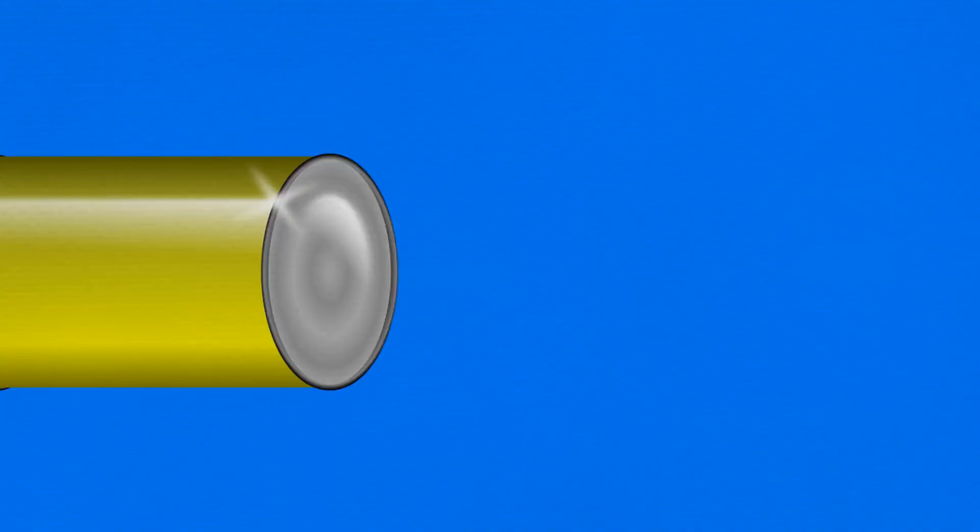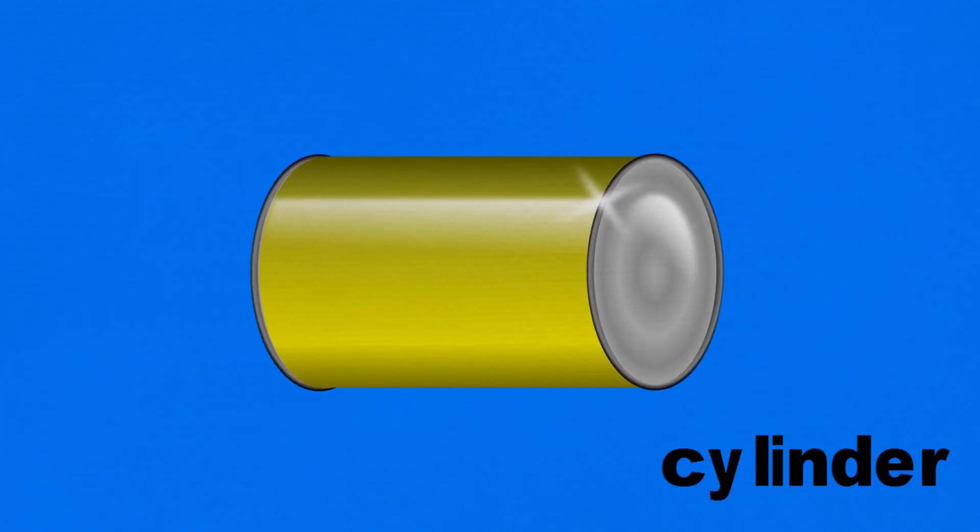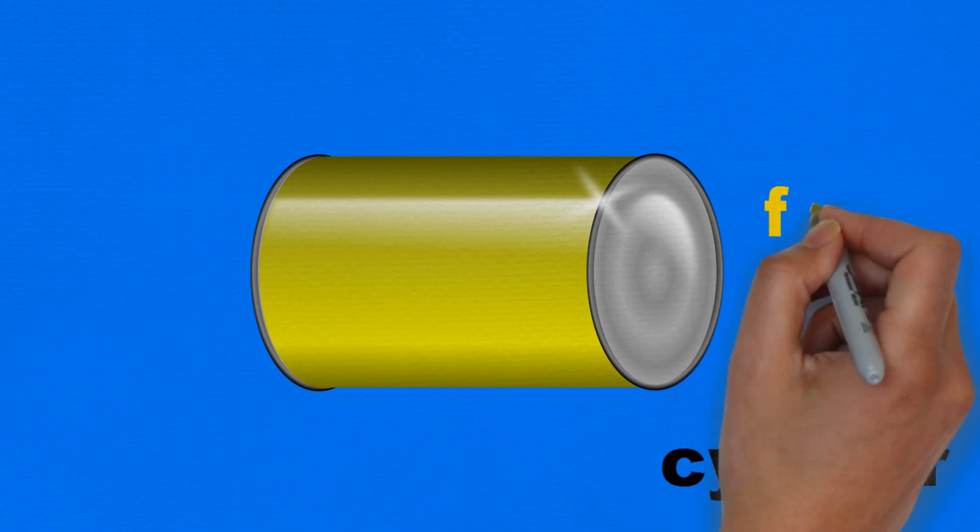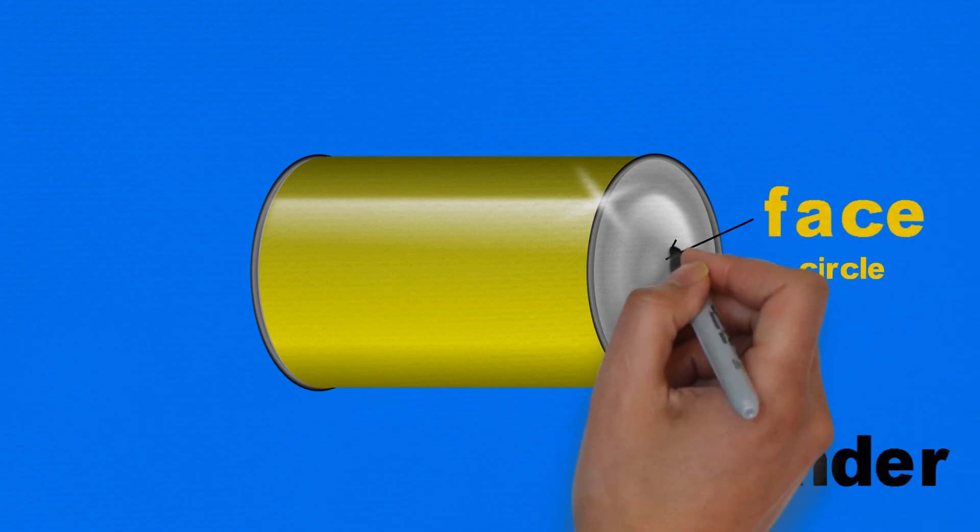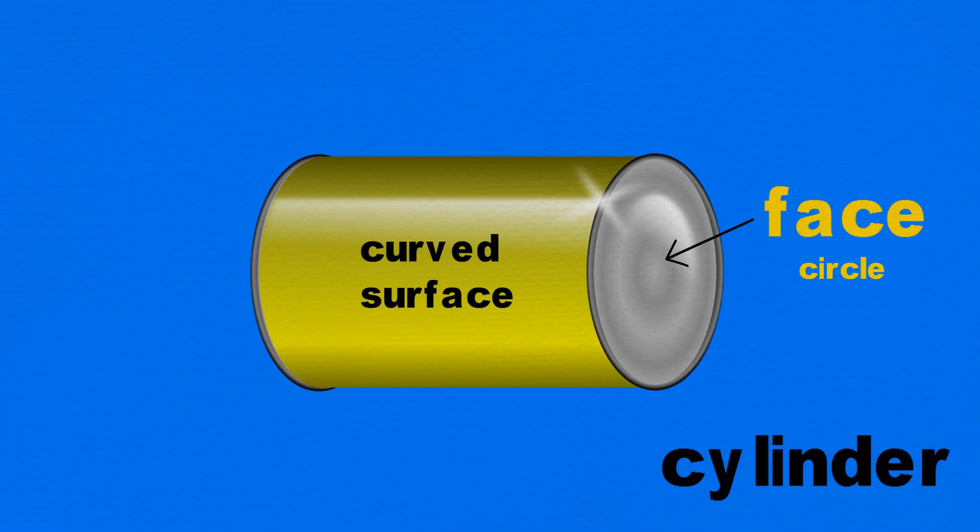The soup can is a cylinder. It has two end faces, which are 2D circles, one curved surface in between, and no straight edges or vertices.